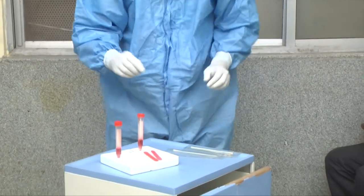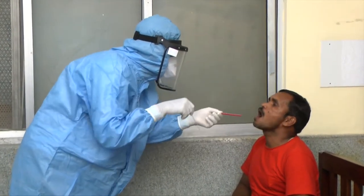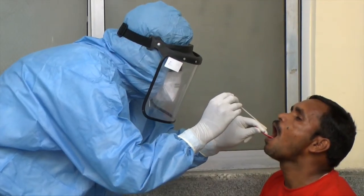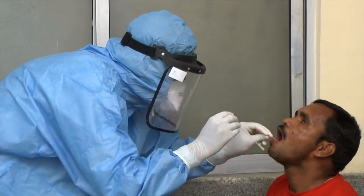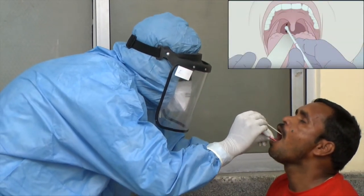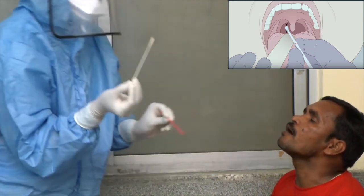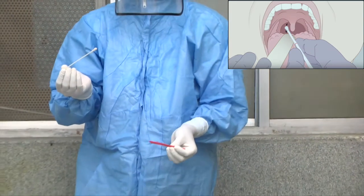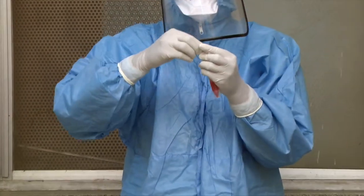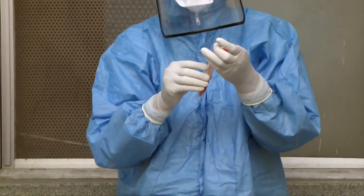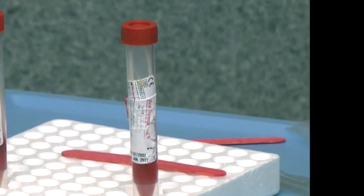Next I will be demonstrating how to collect an oropharyngeal swab. Tilt the patient's head slightly so that the floor of the mouth is horizontal to your eyesight. Using the tongue depressor, insert the swab stick without touching the tongue. Touch the posterior wall of the pharynx without touching the uvula. Once the swab is collected, cut the swab stick and keep it in the same viral transport medium.